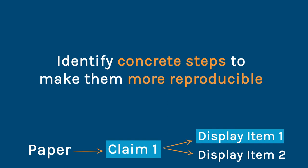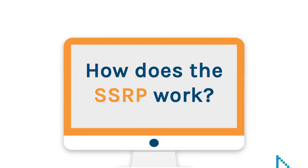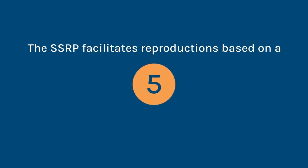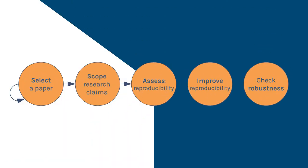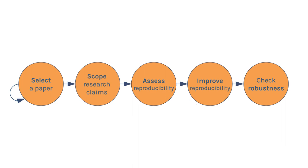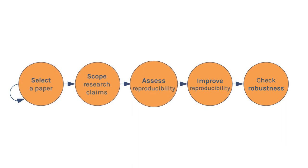So, how does the SSRP work? The SSRP facilitates reproductions based on a five-stage process, including selecting a paper, scoping, assessment, improvements, and robustness. Let's have a closer look at an example.